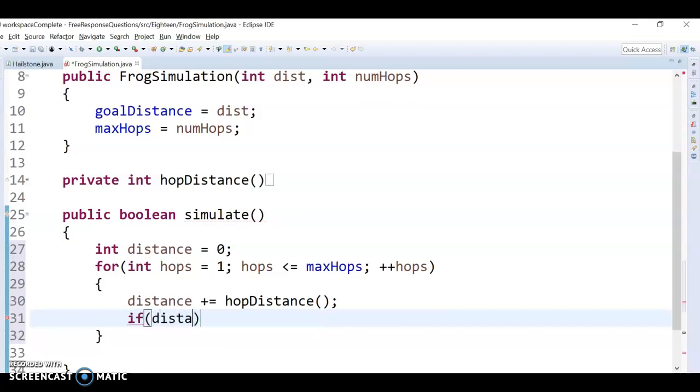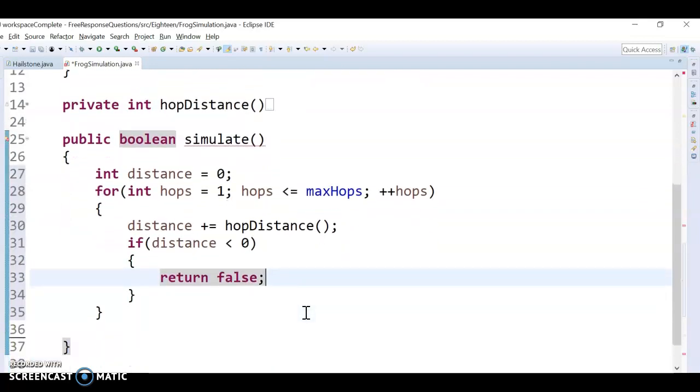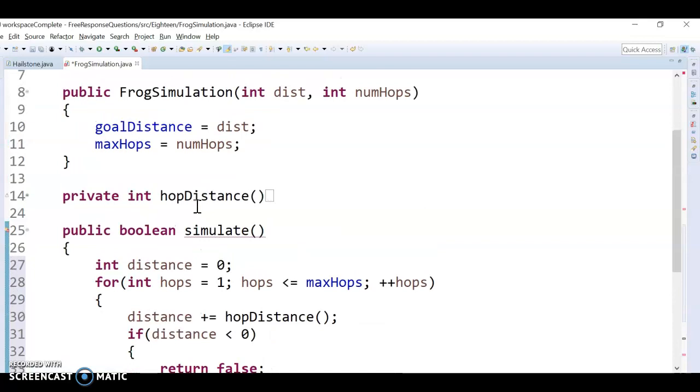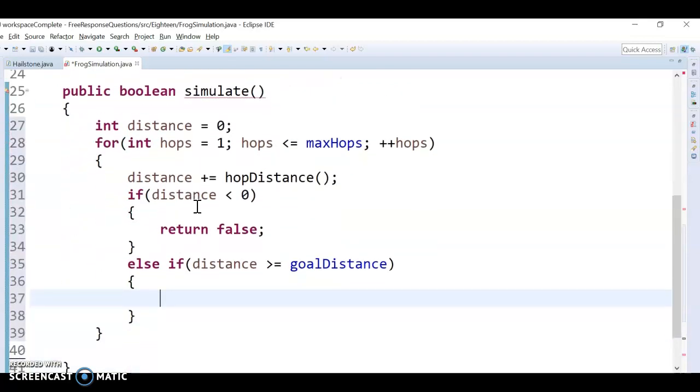And now I'm going to see a couple of things. If I've gone negative, so if my distance is less than zero, then we want to return false. We didn't make it. At this point, we could have actually made it. Maybe you had one giant hop or something and made it, or maybe on the third hop, we make it. So I'm going to do an else if distance is greater than or equal to the goal distance. Again, that's a global variable up here. If it's greater than or equal to, then we made it. So I'm going to return true.